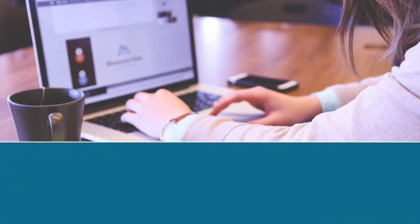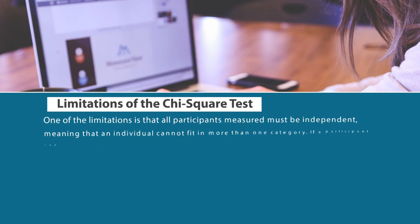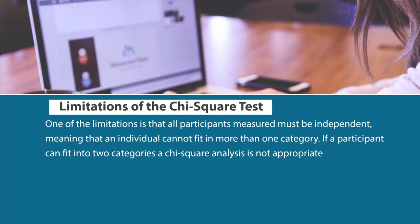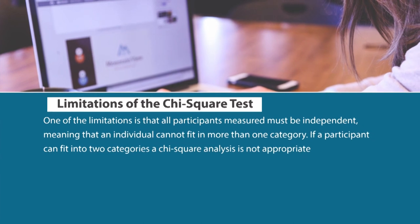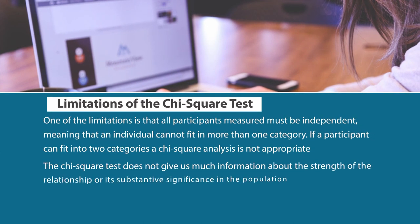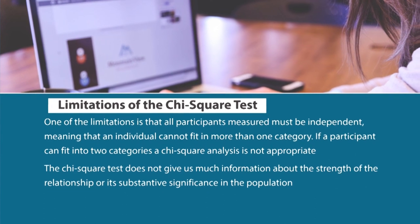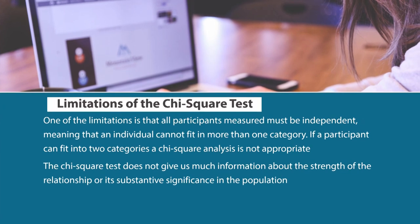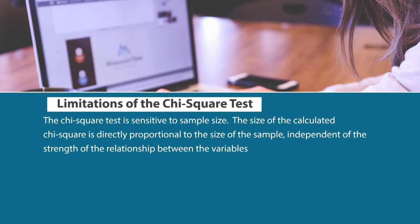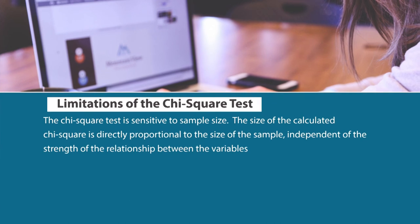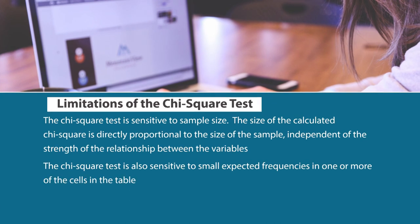There are certain limitations of the Chi-square test. First, all participants measured must be independent — an individual cannot fit into more than one category; if a participant fits into two categories, a Chi-square analysis is not appropriate. Second, the Chi-square test does not give much information about the strength of the relationship or its substantive significance in the population. Third, the Chi-square test is sensitive to sample size — the calculated Chi-square value is directly proportional to the sample size, independent of the strength of the relationship. Fourth, the test is also sensitive to small expected frequencies in one or more cells in the table.